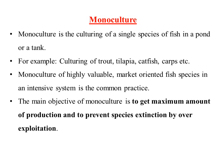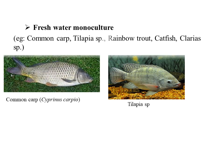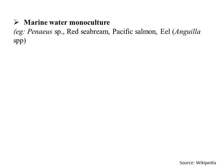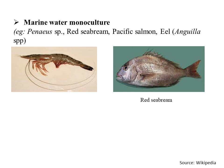Monoculture is divided into different categories based on the water system: freshwater monoculture, marine water monoculture, and brackish water monoculture. In freshwater, species like common carp, tilapia, rainbow trout, and catfish such as Clarias are cultured. In marine environments, shrimps like Penaeus species, red sea bream, Pacific salmon, and eel are cultured using monoculture practices.